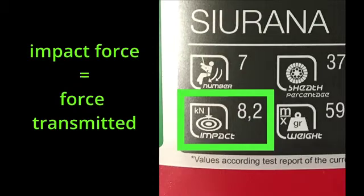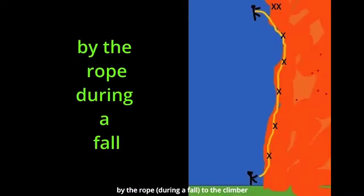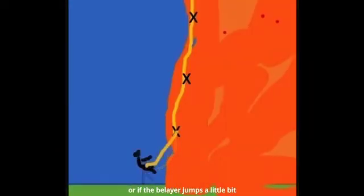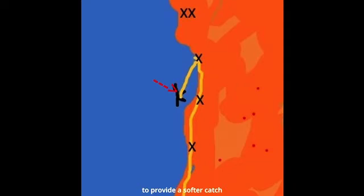Impact force is the force that's transmitted by the rope to the climber. Now naturally there's different things that can contribute to that force like if the belayer gets pulled up or the belayer jumps a little bit to provide a soft catch, but we're gonna ignore that. We're just gonna look purely at the ropes contribution.